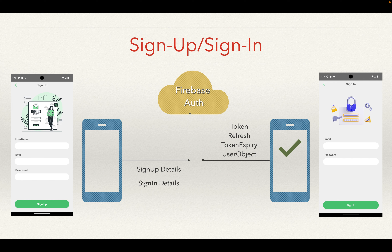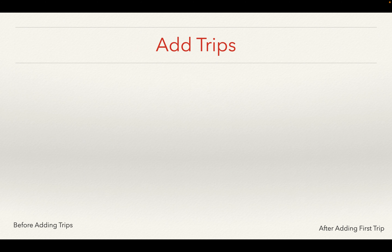Moving on to storing trips — if an email already exists during sign-up, Firebase returns errors, and we track and display those on the screen. That's what the cross mark indicates. Similarly for sign-in, if the password is wrong or the email is incorrectly formatted, we receive an error from Firebase and use try-catch blocks to catch and display it on the screen. We will see this in the real demo.